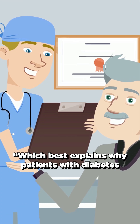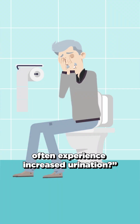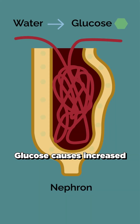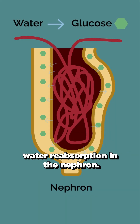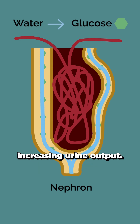The question is: which best explains why patients with diabetes often experience increased urination? Option A: glucose causes increased water reabsorption in the nephron. Option B: glucose pulls water into the nephron, increasing urine output.